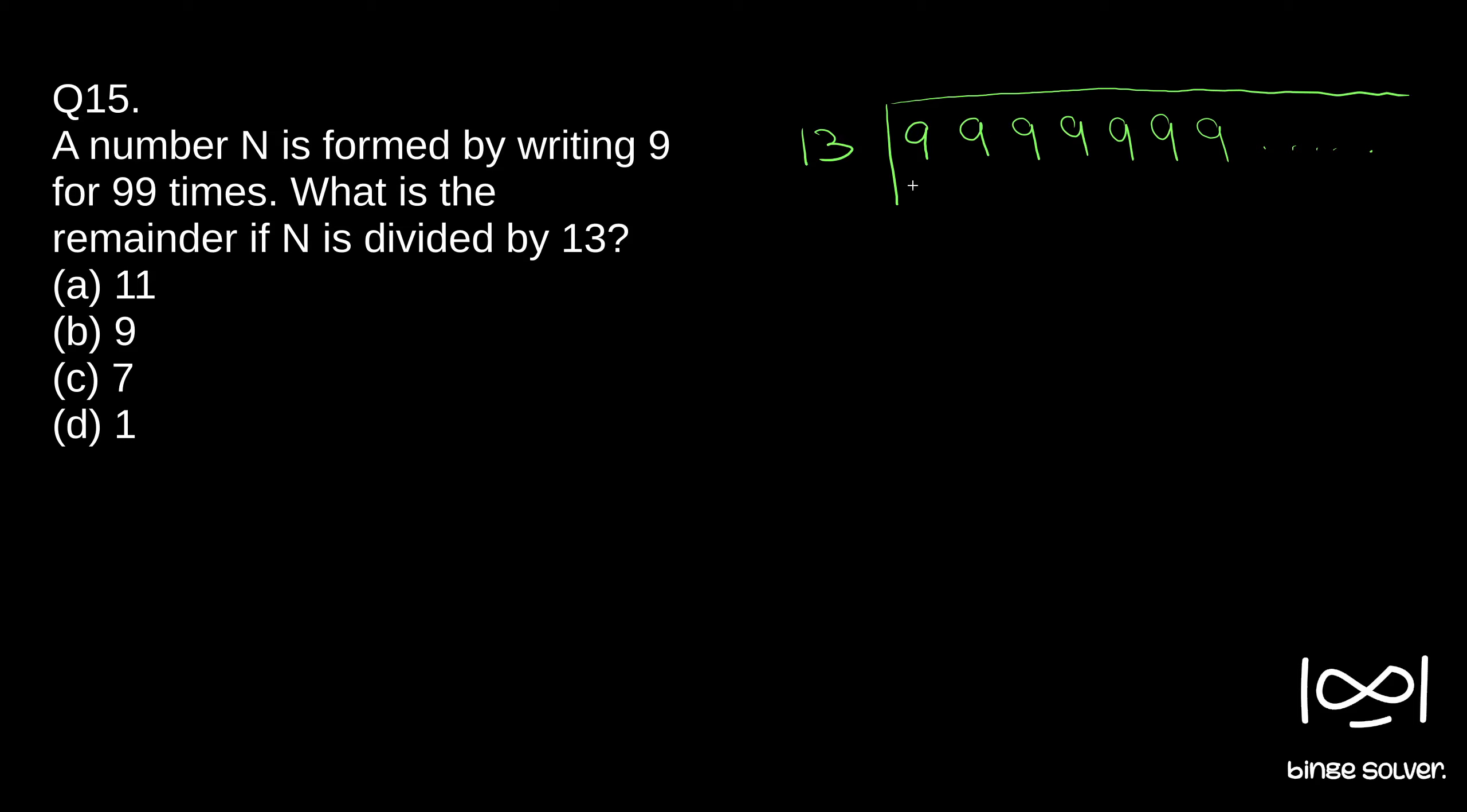If there was only one nine, the remainder would have been nine. If we take two nines, 13 into 7 is 91. So we have 91 here, and the remainder would have been 8. For one nine, we would have remainder as nine.